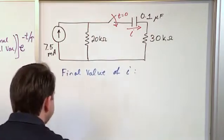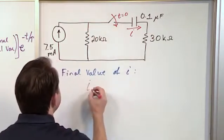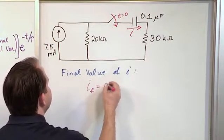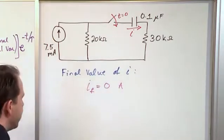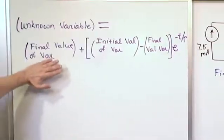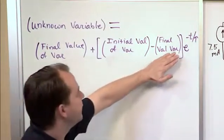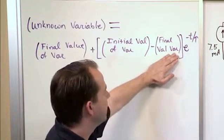You just write down here that i sub f, meaning final, is zero amps. Now you have a good chunk of your answer because the final value goes here and the final value also goes here.